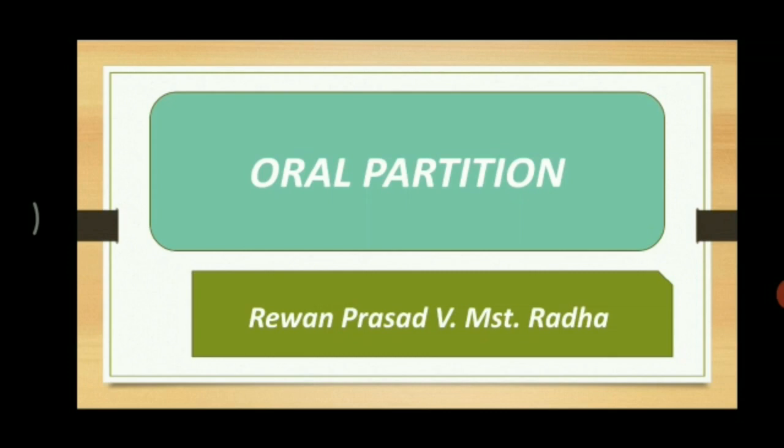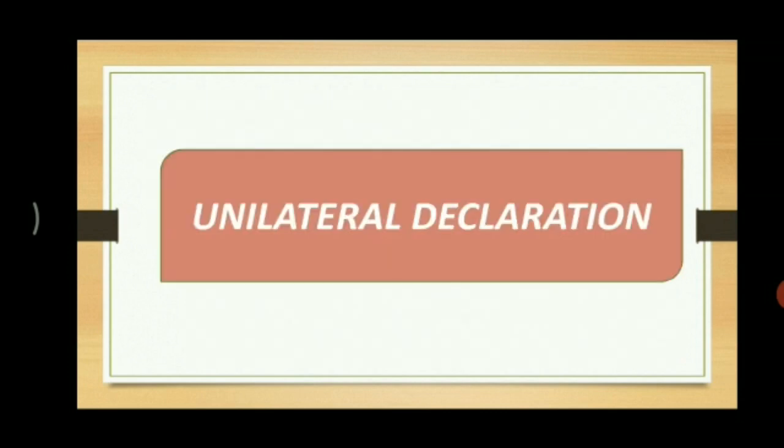Then comes the second mode, that is unilateral declaration. It says that the severance of status can also be brought about by a unilateral exercise of power to partition. This in other words means that the consent of the other co-parceners is not necessary. If a single co-parcener who needs the partition gives a declaration, that will also be a valid mode.